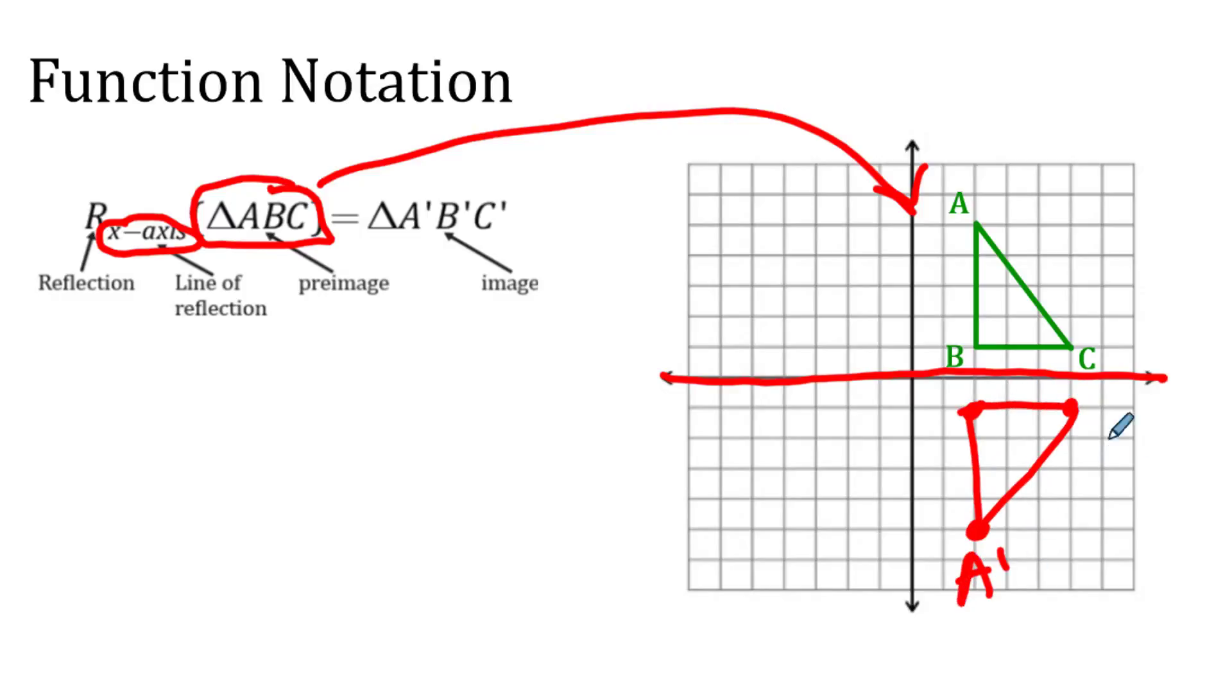So this is A prime, B prime, and C prime. That's our reflected image. That's how you read this function notation.